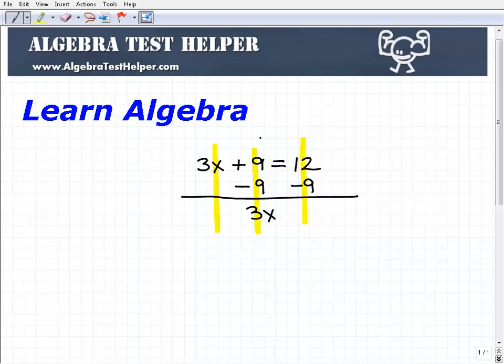So that goes away, and that's exactly what I want to happen, right? So I get 3x equals 12 plus negative 9, or 12 minus 9, and of course that is equal to 3.